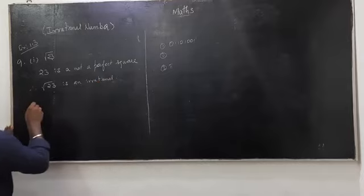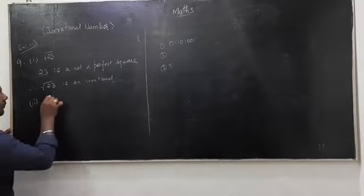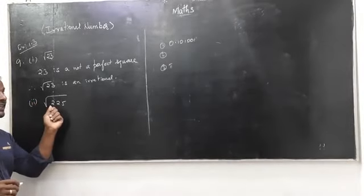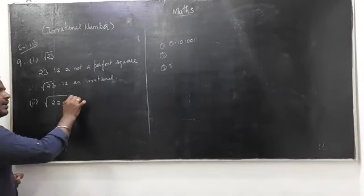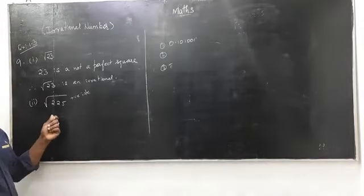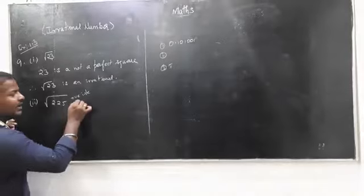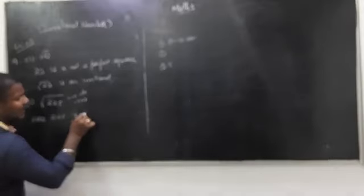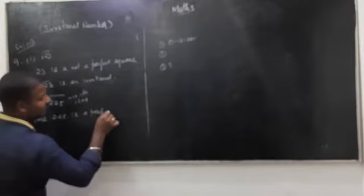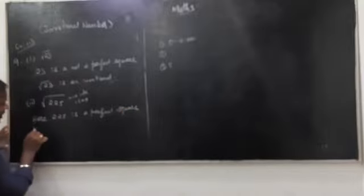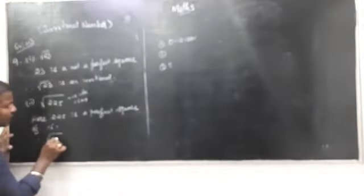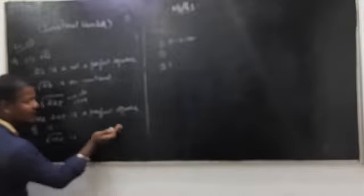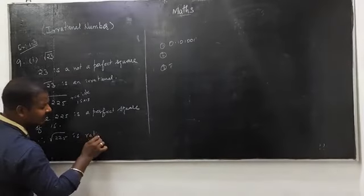Second number: √225. We check: 225 is a positive integer. Is it a perfect square? Yes — 15 × 15 = 225. So 225 is a perfect square of 15. Therefore, √225 is not an irrational number — it is a rational number.